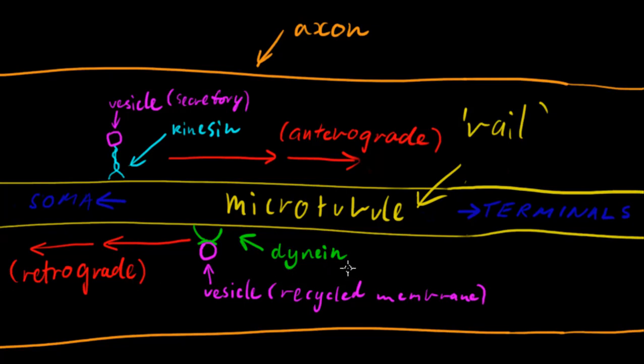On the other hand, however, dyneins only travel in the retrograde direction which is towards the soma or cell body and the other end, of course, is the terminals or where the neurotransmitter comes out.